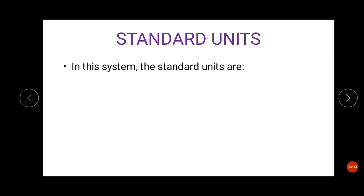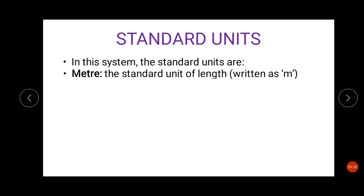In this system, the standard units are meter, which is a standard unit of length and can be symbolized by small m. So anything that we use in meters, we use the symbol small m after the number. Kilogram is the standard unit of mass and the symbol is kg. So that is the short form of kilogram.